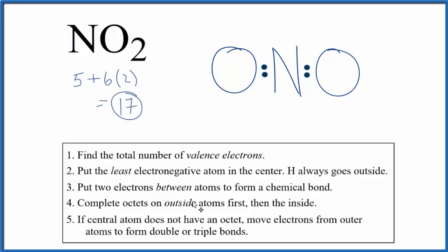Let's complete the octets on the outside atoms first, the oxygens. At this point, each oxygen has an octet. We've used 16 valence electrons.